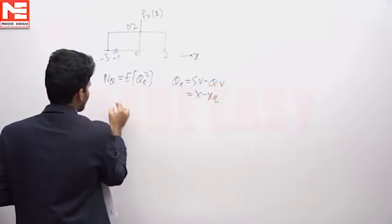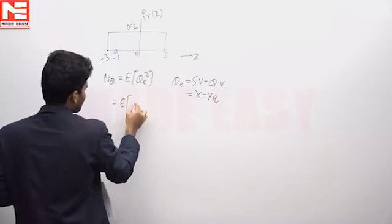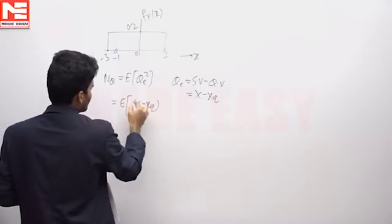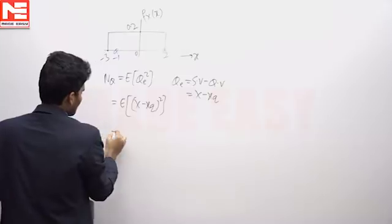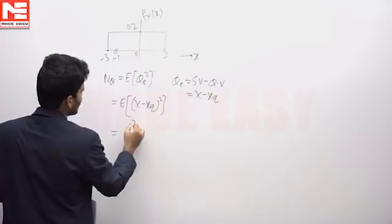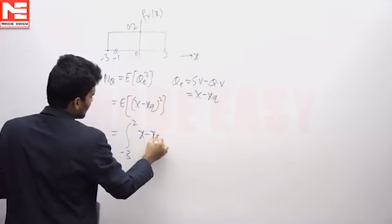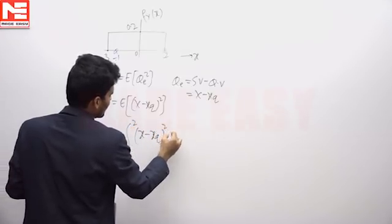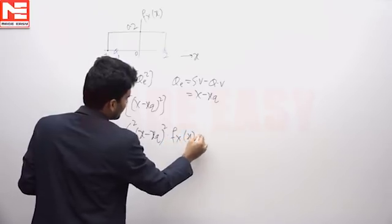It is X minus XQ. It is expectation of X minus XQ square. It is integration, minus infinite to infinite, but the random variable takes the values from minus 3 to 2: X minus XQ square into FX of X.